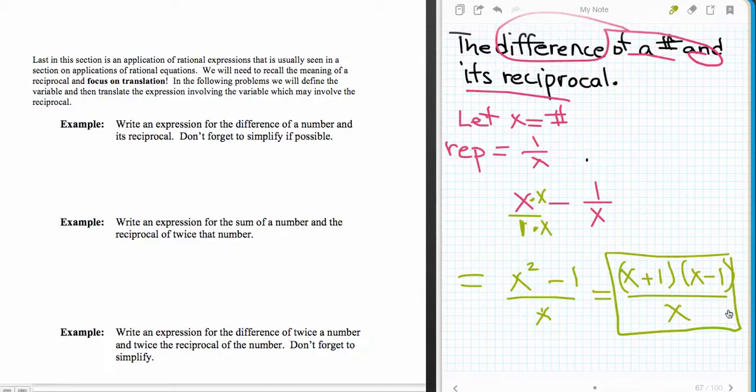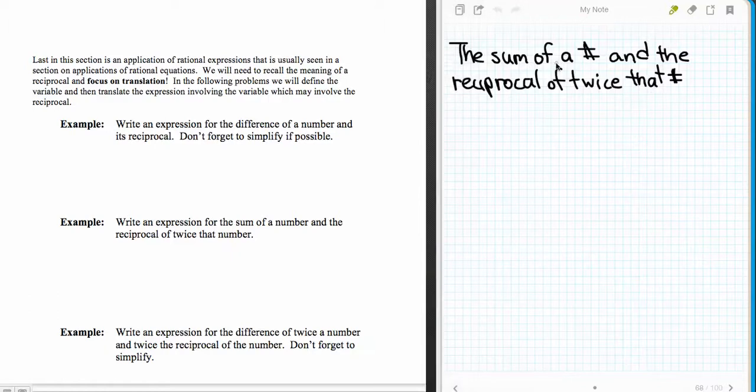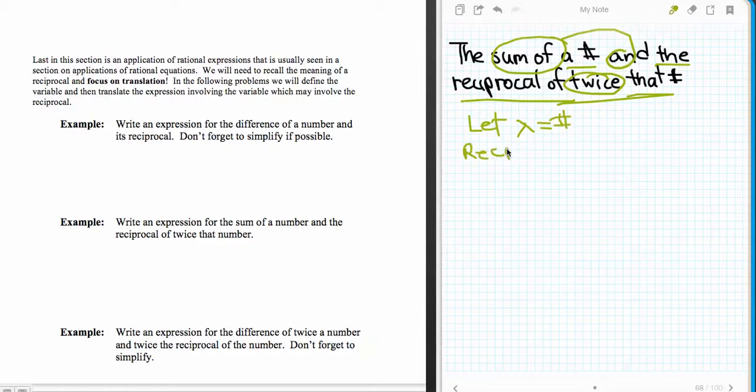Now looking at our second example here, we have the sum of a number and the reciprocal of twice the number. So all of that is what we're dealing with. We're first going to let the number be equal to x. And then I'm going to define its reciprocal as being 1 over x.